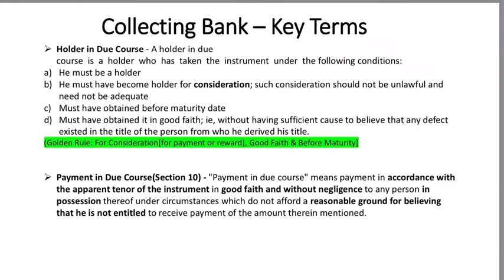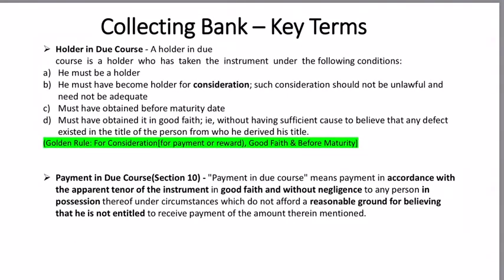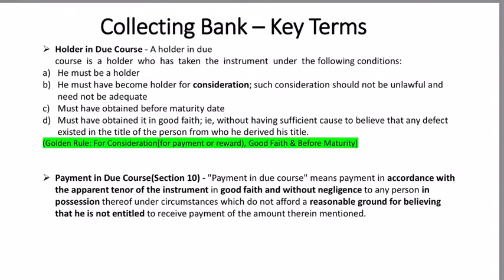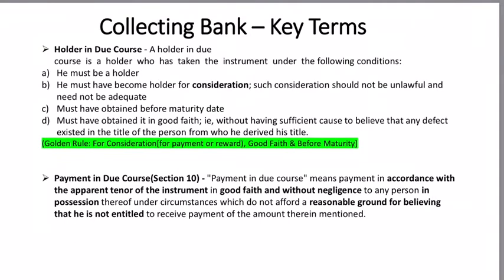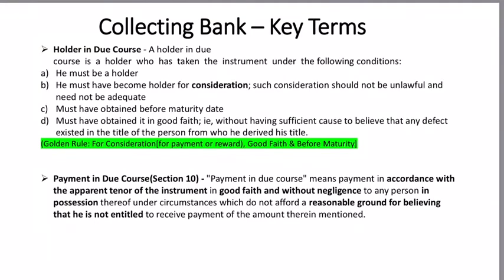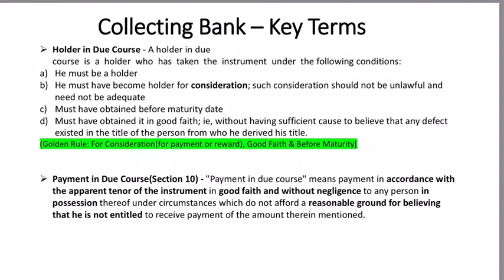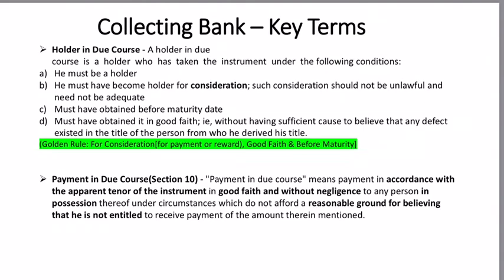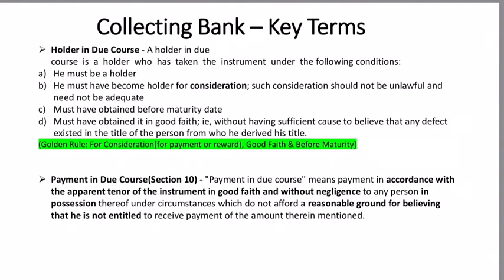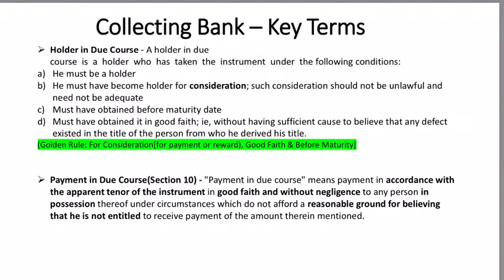And he must also have obtained it in good faith — that is, Mr. Y has no reason to think that Mr. X would have done some fraud or something must have gone wrong prior to him getting the check. Good faith means honestly and genuinely believing in the dealing. So for holder in due course, the golden rules are: he needs to be a holder, he must get the negotiable instrument for a consideration or value he has delivered, and it must be before maturity date and in good faith.